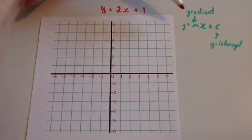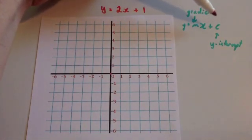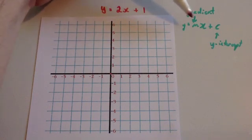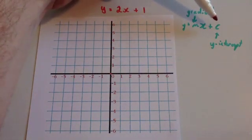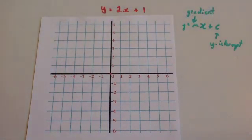Just to recap, if you've got a linear graph in the format y equals mx plus c, m stands for the gradient — so in other words, if you go across one square, how many up or down it goes — and c stands for the y-intercept, where it crosses the y-axis.